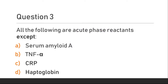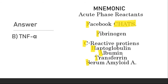Question 3. All the following are acute phase reactants except: Option A, Serum amyloid A; Option B, TNF-Alpha; Option C, CRP; Option D, Haptoglobin. The answer is Option B, TNF-Alpha.